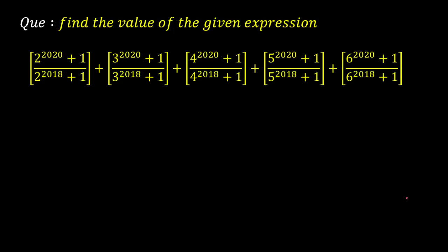Hello everyone. Today we're going to look at a KVPY problem from 2021. The problem is: find the value of the given expression. The expression consists of five terms. Before I start, I want to tell you this: